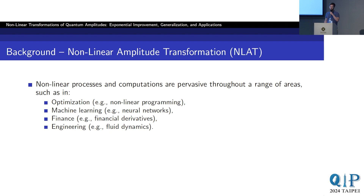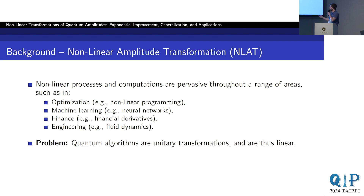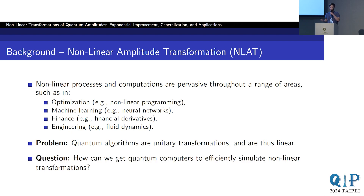Nonlinear processes are common throughout nature in various fields, such as the ones you can see here — common in optimization, machine learning, finance, engineering, et cetera. But there's a problem: quantum algorithms are unitary operations and are therefore linear. So how do you actually get these things to efficiently simulate nonlinear transformations?